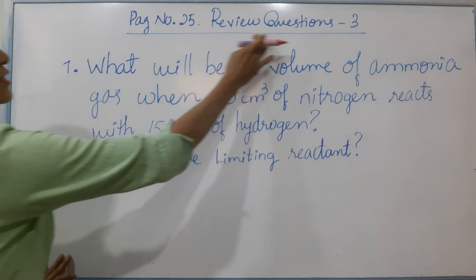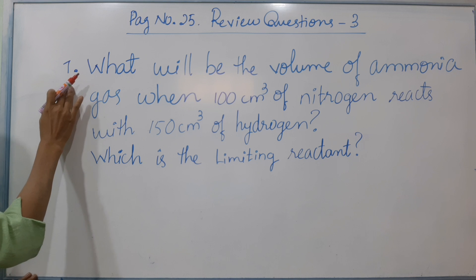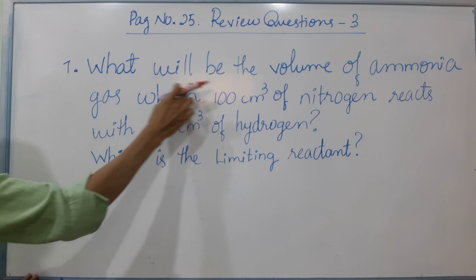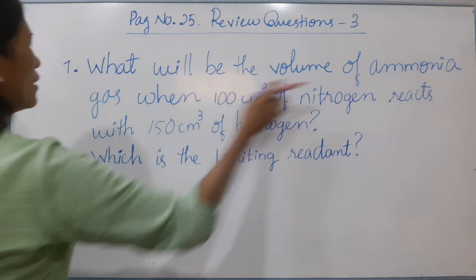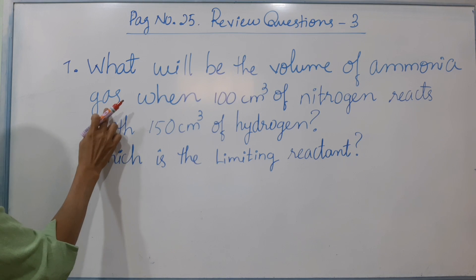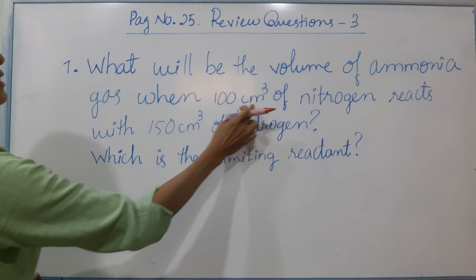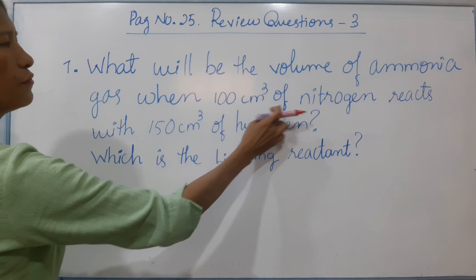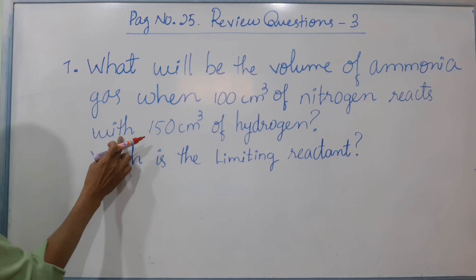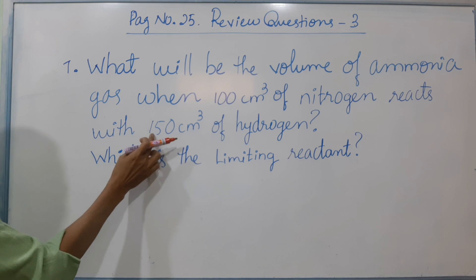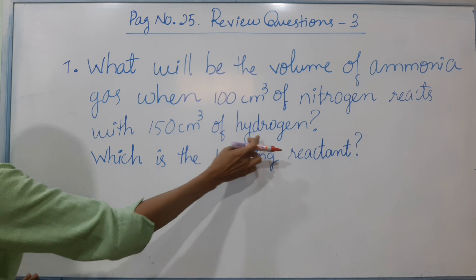Step down to review question 3, number 1: what will be the volume of ammonia gas if 100 cm² of nitrogen reacts with 150 cm² of hydrogen?